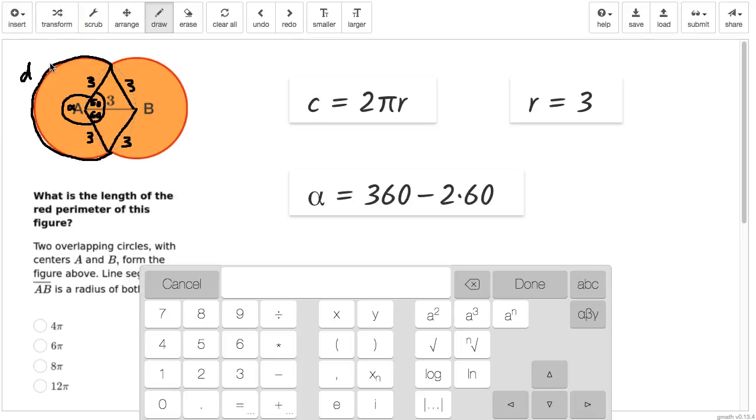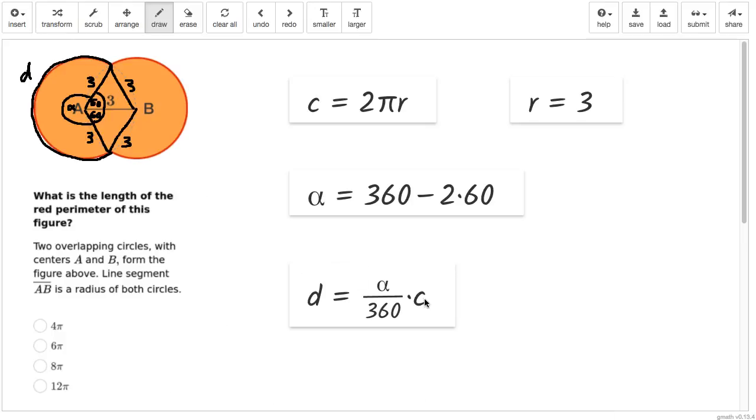So let me insert that here as a formula. So we'll have D is 360, or is actually alpha, portion between alpha and the full 360 times C, the full circumference.